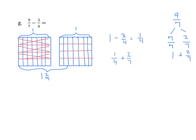Looking at the model, we see that we have 28 units — 7 by 4, that's 28. You might also note that if we multiply those two denominators, we get a common denominator. So now, 1 fourth becomes 7 twenty-eighths, and 2 sevenths becomes 8 twenty-eighths. We find the sum and we get 15 twenty-eighths. So the difference of 9 sevenths minus 3 fourths is 15 twenty-eighths.